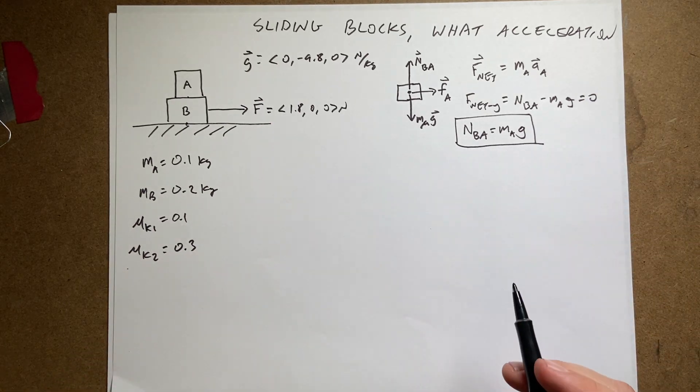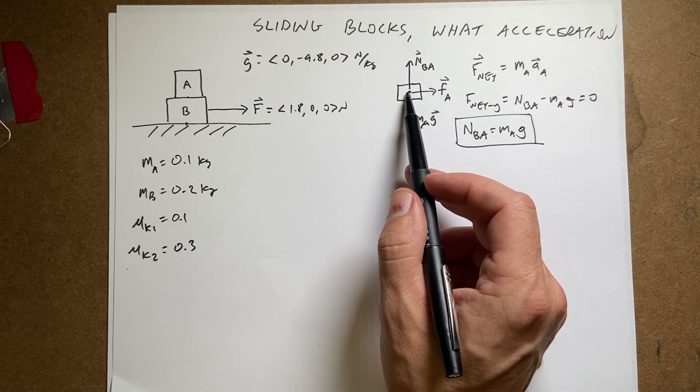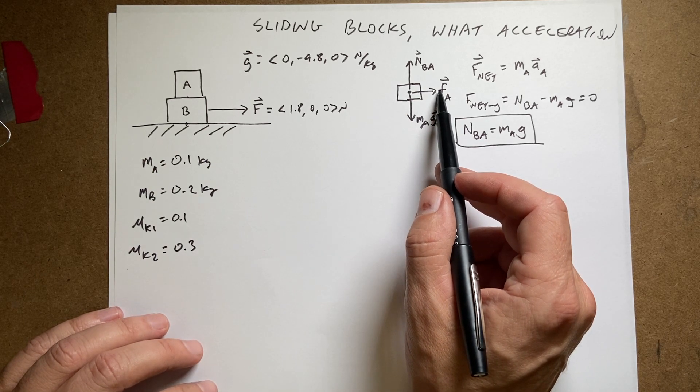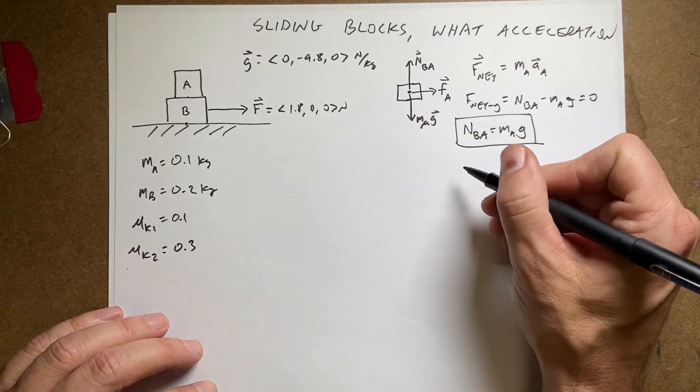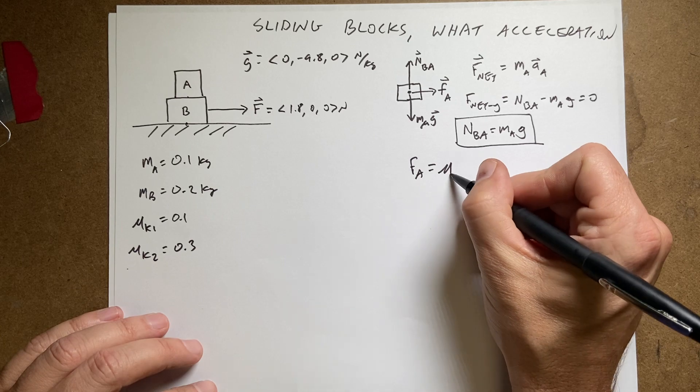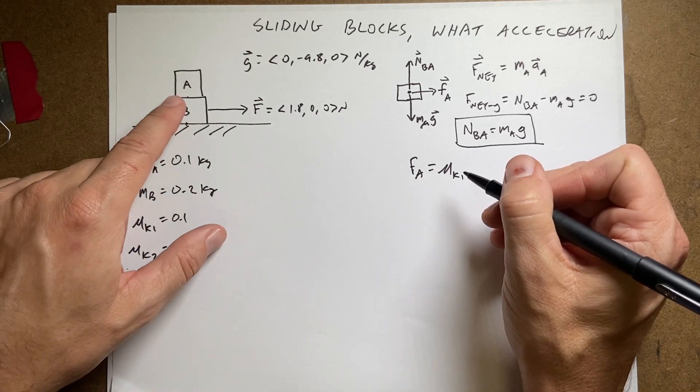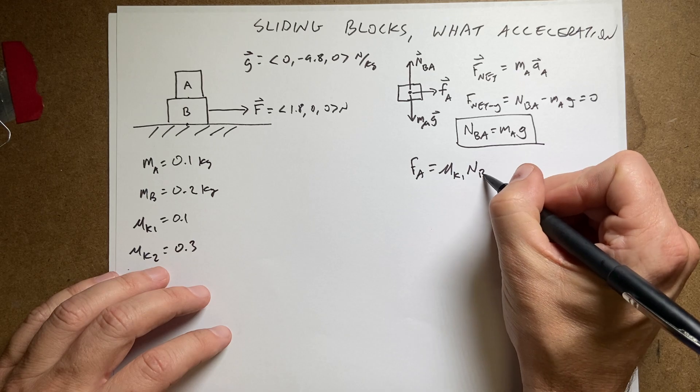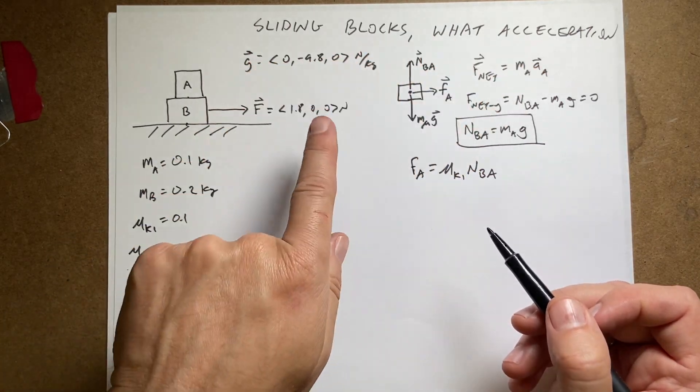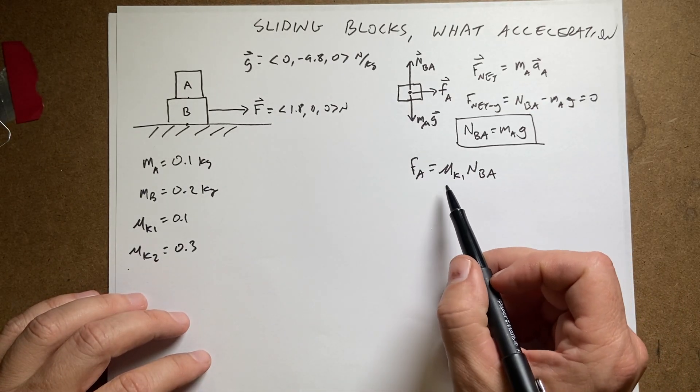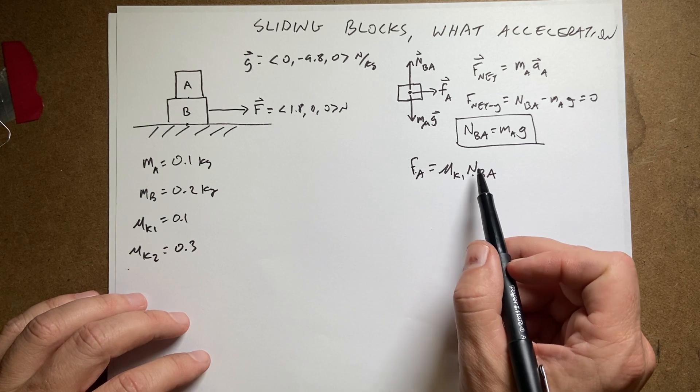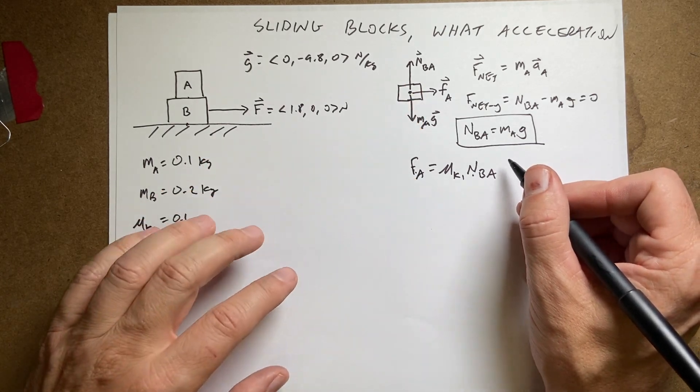Now, why do we care about the normal force on block A? It's because the frictional force, the magnitude of the frictional force depends on this. So here's our model for the frictional force. F A is equal to mu K 1 times N B A. This is not a vector equation because the frictional force is that way and the normal force is that way. So they can't be vectors, but that's the magnitude. So now I know the frictional force, I know N B A, and I can set this. This is the only force in the X direction.